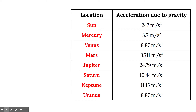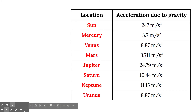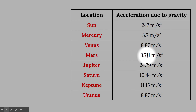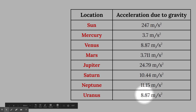Here are some accelerations due to gravity on different planets and on the sun. On the sun, acceleration due to gravity is 247 meters per second squared — that's really strong and will result in a really big weight. Mercury is small; Venus is a little smaller than Earth. Mars has a smaller one than us. Our acceleration due to gravity is 9.8 meters per second squared. Jupiter, because it has a much larger mass, has an acceleration due to gravity of 24.79. Saturn is 10.44. Neptune is 11.15, and Uranus is 8.87.